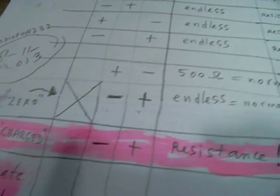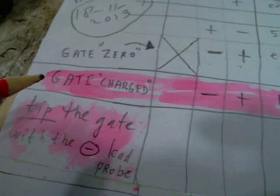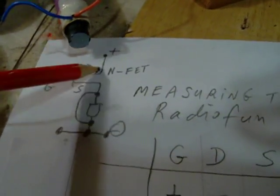And you can of course repeat this whole trick. Tip the gate again with the negative lead from your probe from your meter, and you will again see that there is a low resistance here.